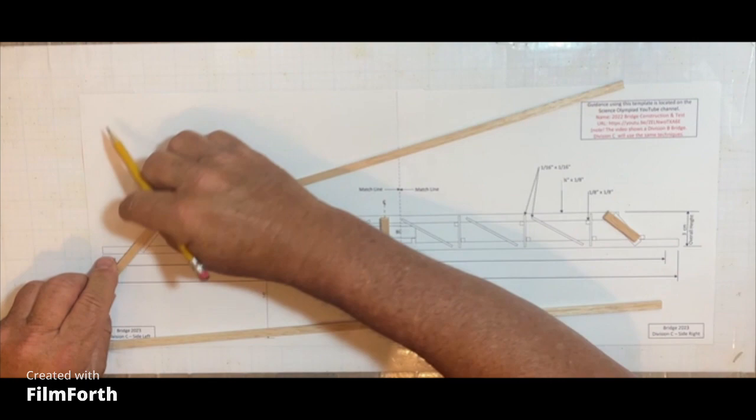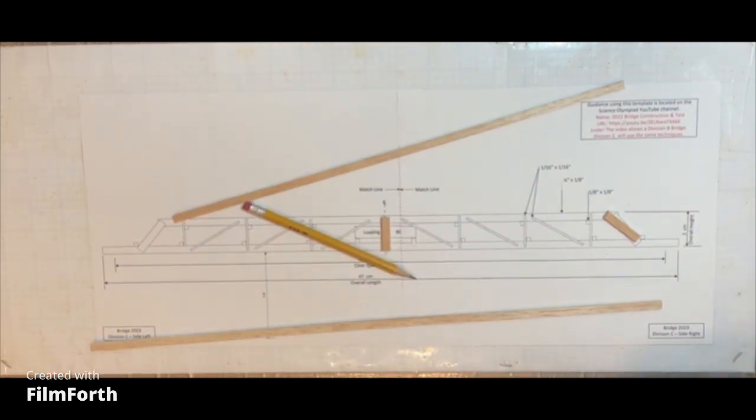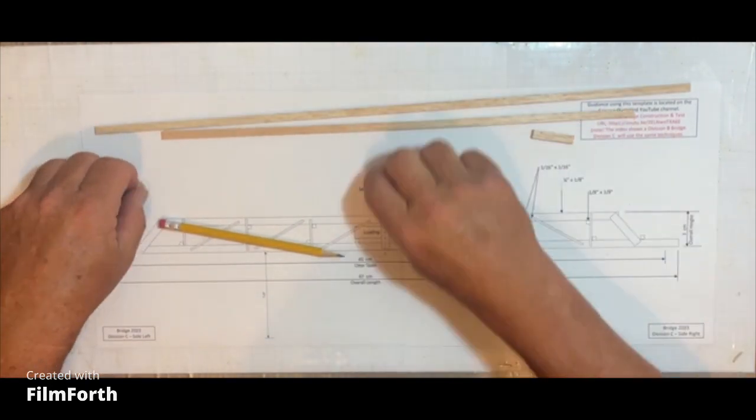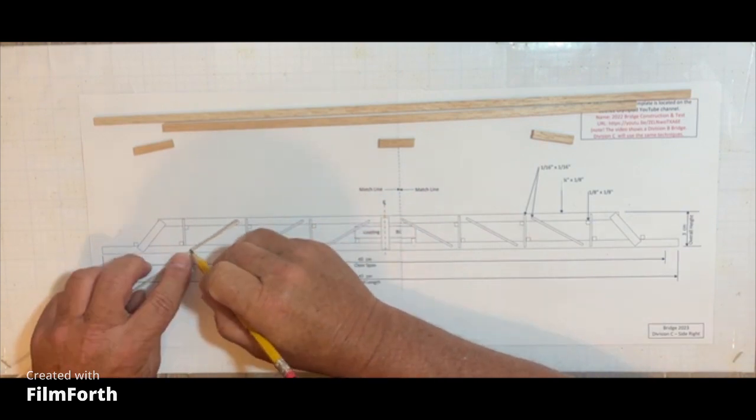After this we'll be taking the 1/16 inch pieces which will be the vertical and horizontal or cross members. We're doing the cross members here.